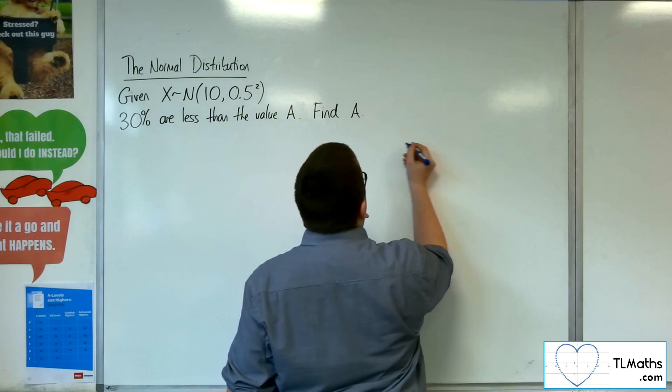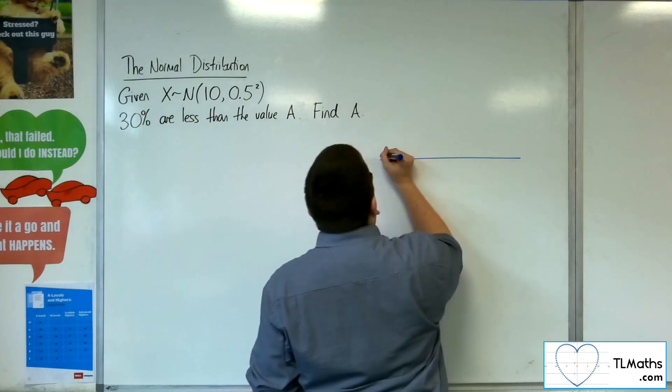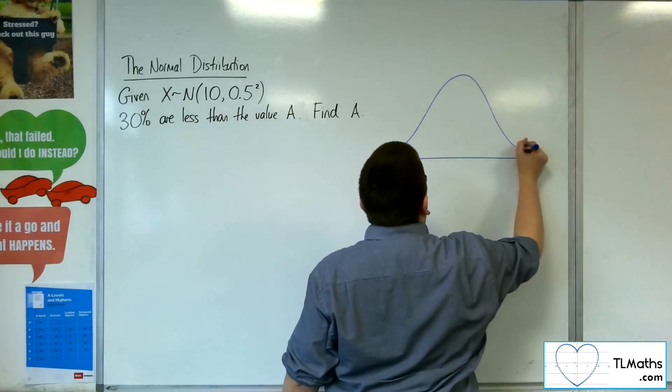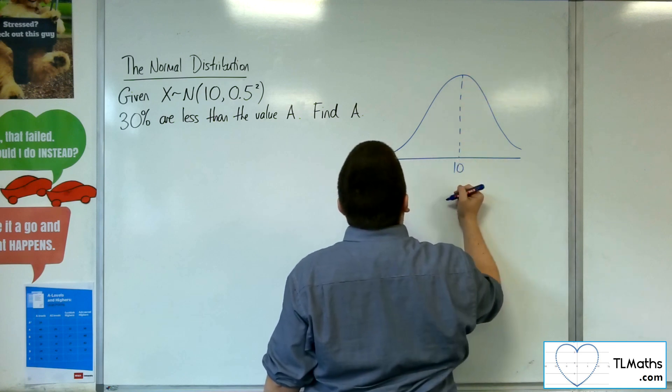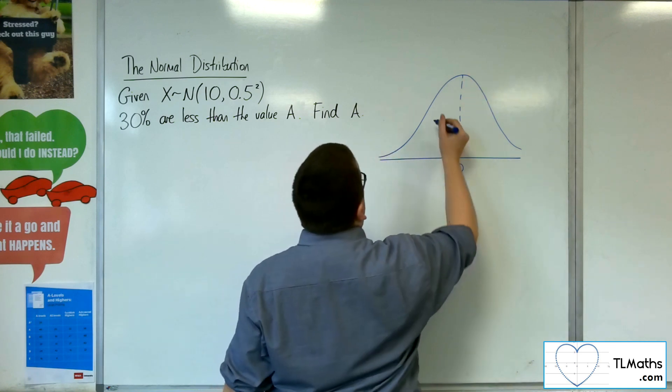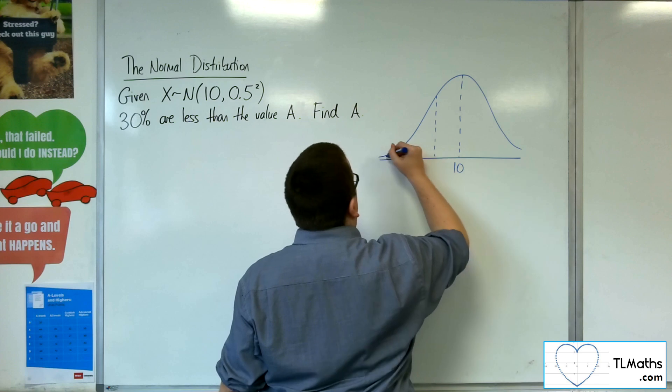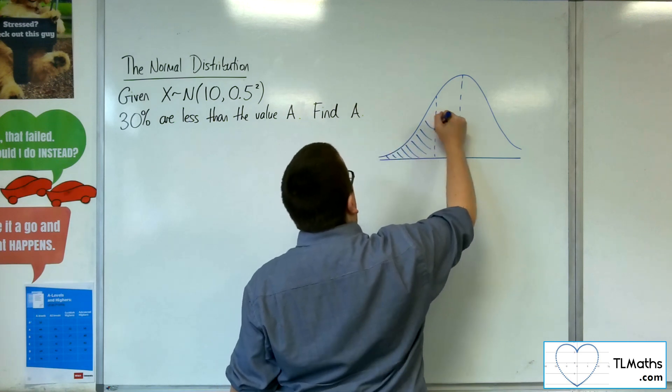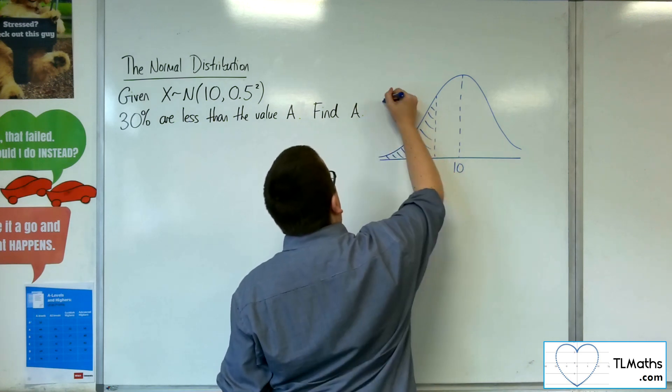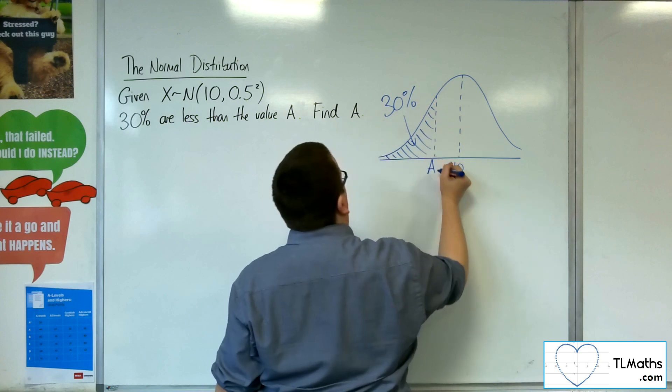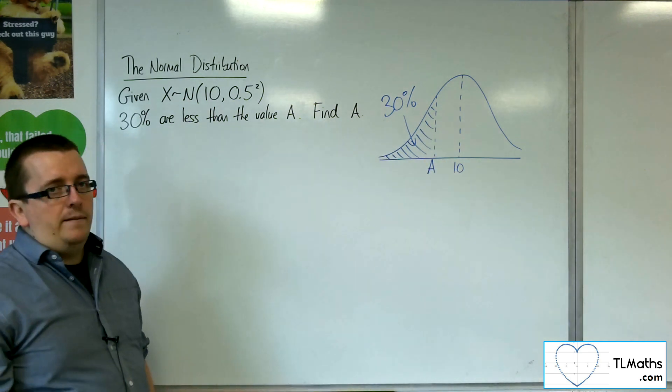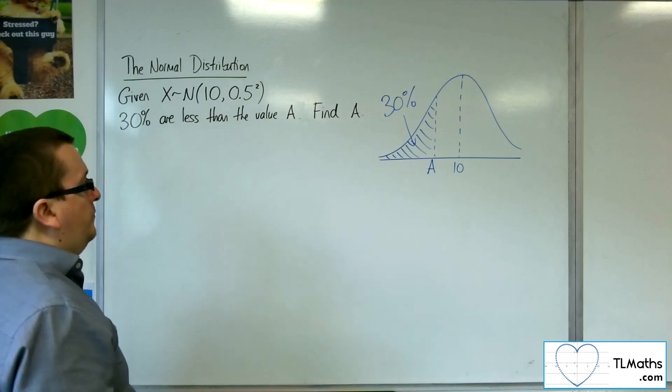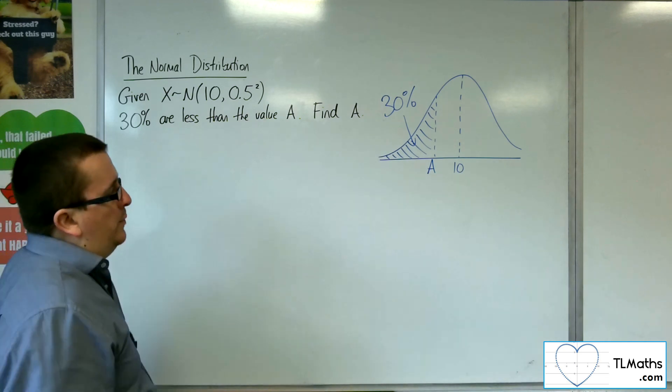So what does this look like on a diagram? So on the diagram, we would have a mean as 10, and I'm telling you that 30%, so this is 30%, 30% are less than a specific value A. So A would have to be less than 10. And we need to find out that value of A.